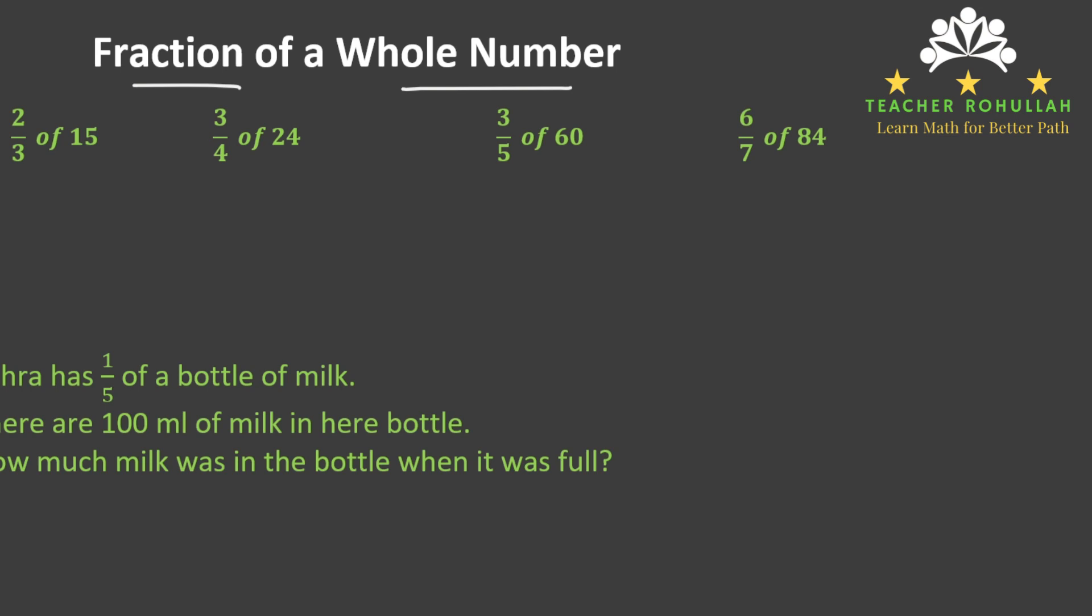So the first question is two-thirds of 15. To find two-thirds of 15, we first divide 15 by 3 which gives us 5 and then multiply 5 by 2 to find two-thirds of 15. So 5 times 2 is 10. We can say that two-thirds of 15 is equal to 10.